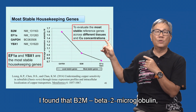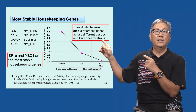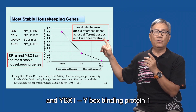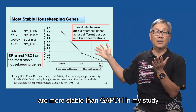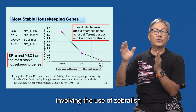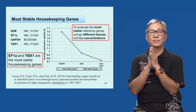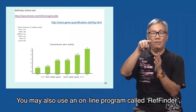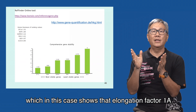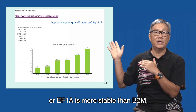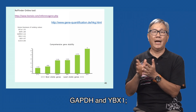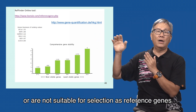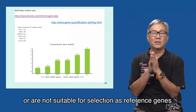I found that B2M (β2-microglobulin), EF1A (elongation factor 1α), and YBX1 (Y-box binding protein 1) are more stable than GAPDH in my study involving the use of zebrafish after the administration of cobalt ions. You may also use an online program called REFfinder, which in this case shows that elongation factor 1A or EF1A is more stable than B2M, GAPDH, and YBX1, while 18S is not suitable for selection as a reference gene.